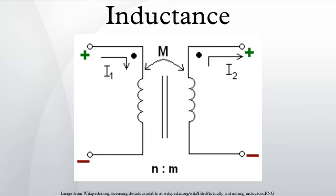Origin of term: The term inductance was coined by Oliver Heaviside in February 1886. It is customary to use the symbol L for inductance, in honor of the physicist Heinrich Lenz. In the SI system the measurement unit for inductance is the Henry, H, named in honor of the scientist who discovered inductance, Joseph Henry.